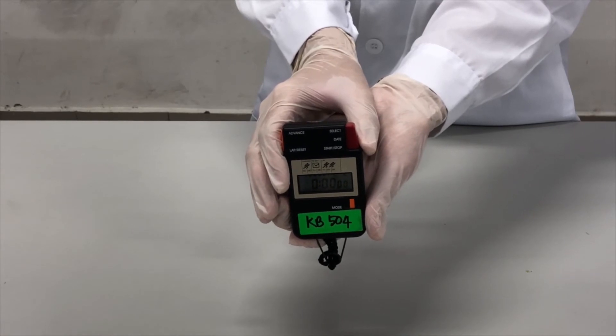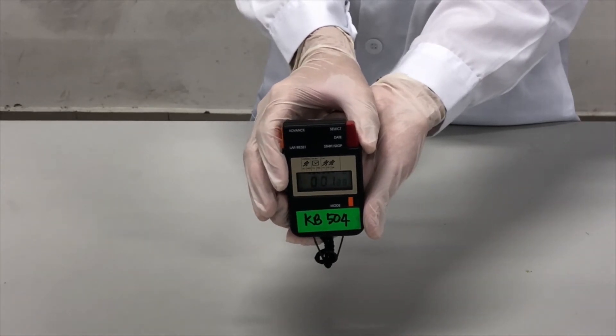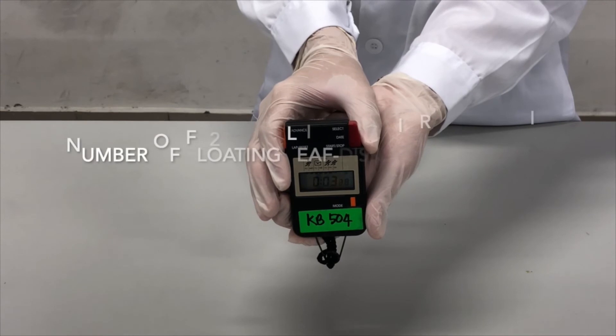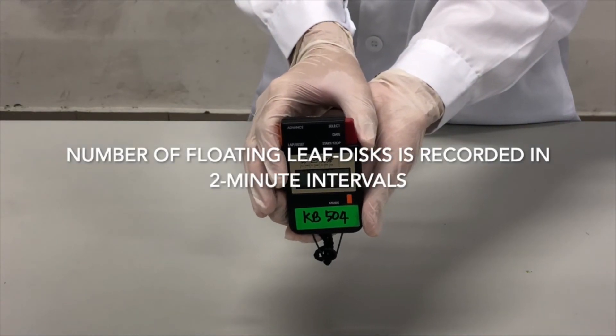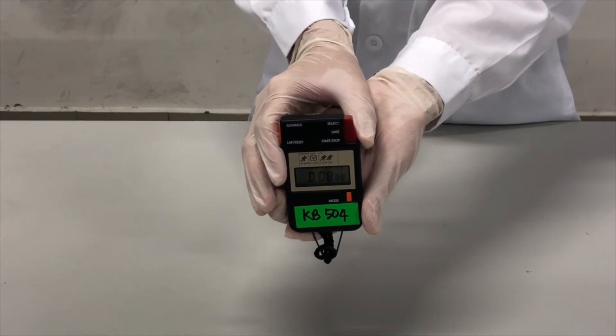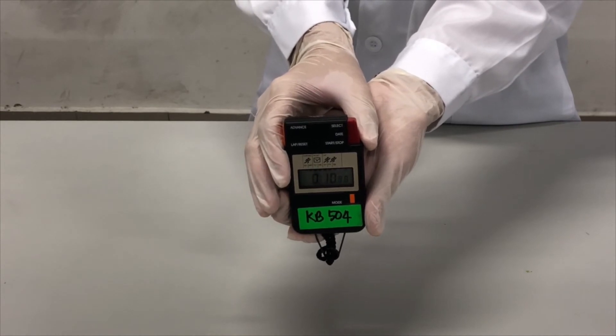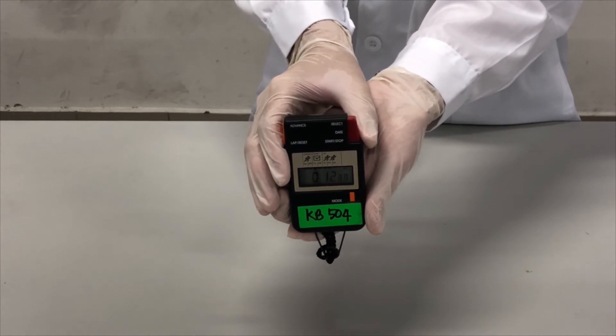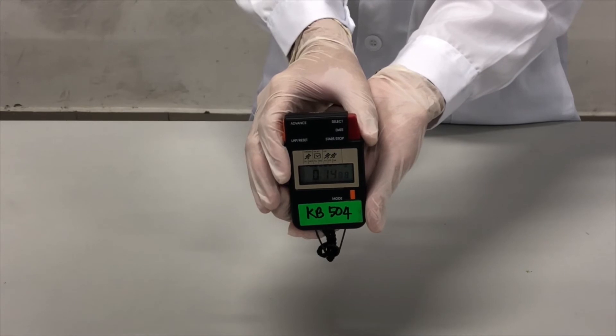Stopwatch is started immediately. After all the beaker are placed, the number of floating leaf disks will be recorded in 2-minute intervals. The experiment will continue until all leaf disks float. All results will be recorded and tabulated.